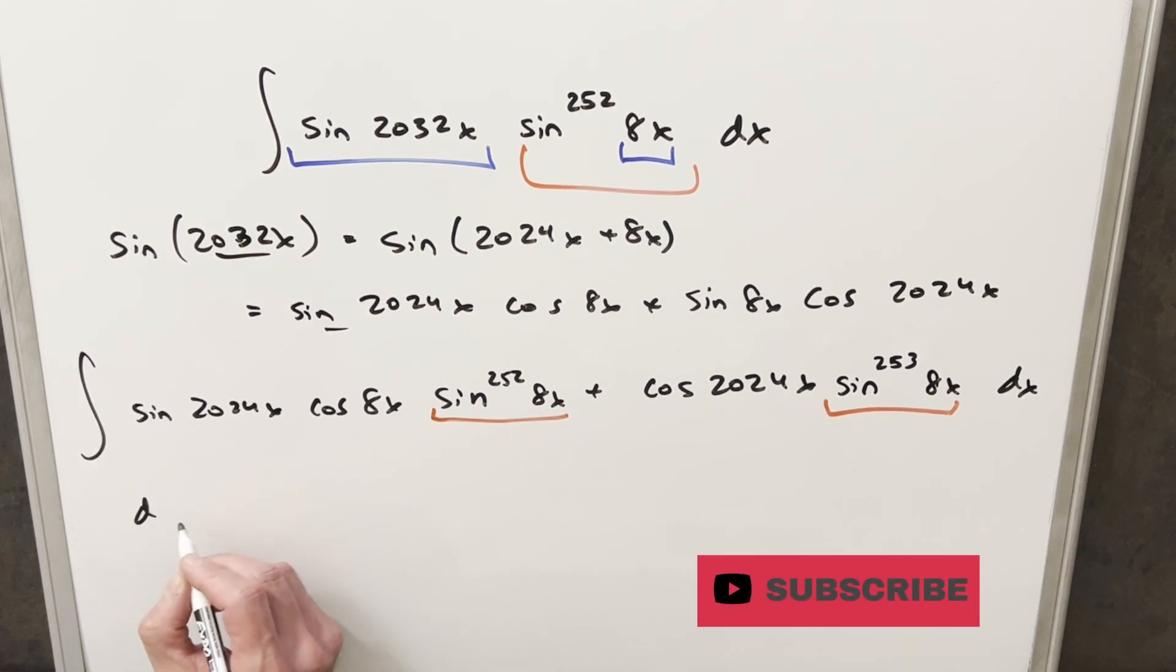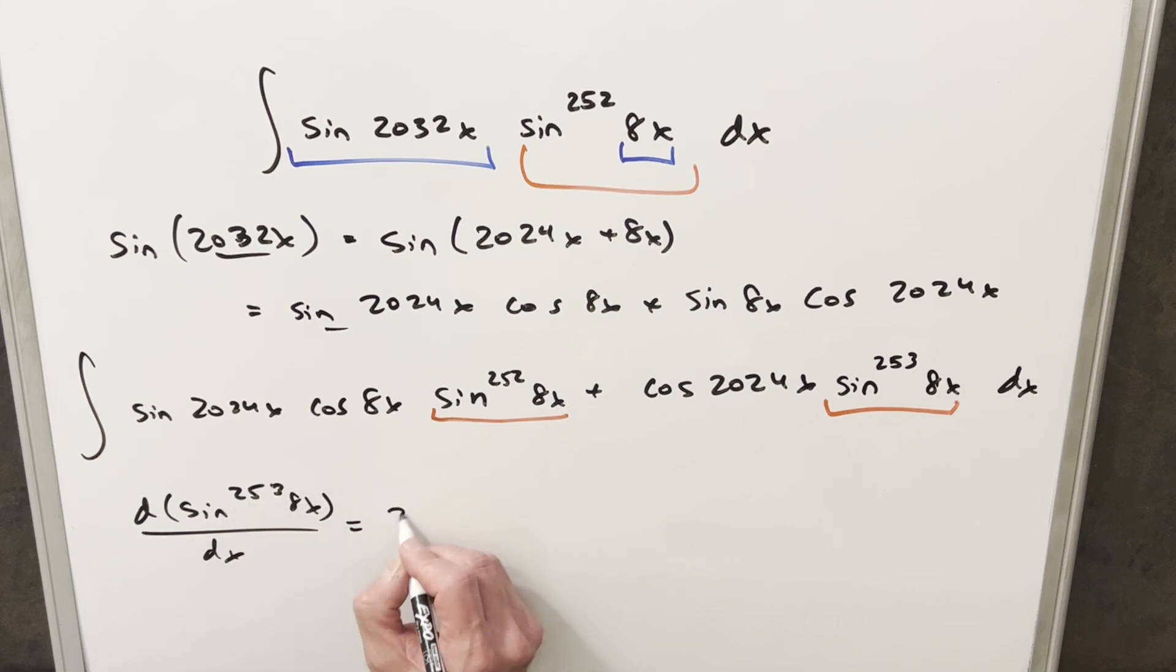So let's go ahead and we'll just look at the derivative of this thing. So first, we'll use power rule on this. So it's going to be 253, sin, decrease the power to 252, 8x. Then we need chain rule on sin(8x). That's going to be cos(8x). But then we use chain rule again, and we need to bring an 8 out. So we multiply by 8 here. But 8 times 253, that's going to be 2024.